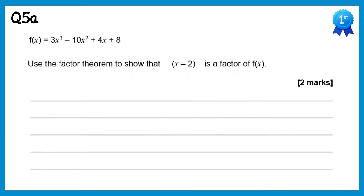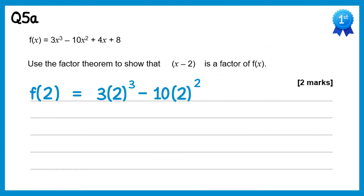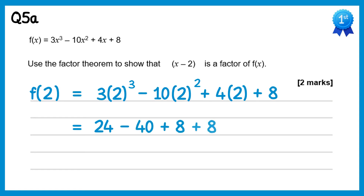For this question we have to show x minus 2 is a factor, so we'll do f of 2. That's 3 lots of 2 cubed, take away 10 lots of 2 squared, plus 4 lots of 2, plus 8. 2 cubed is 8, so 3 eights are 24. 2 squared is 4 and negative 10 times 4 is negative 40. 4 twos are 8, and then plus 8. This gives you 0, so we've shown it's a factor.